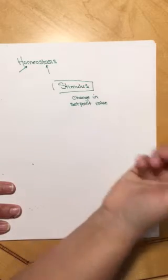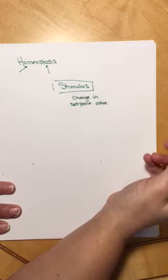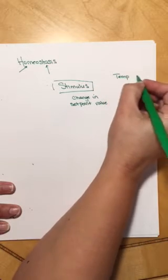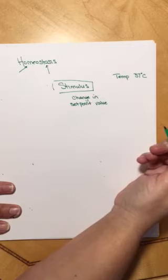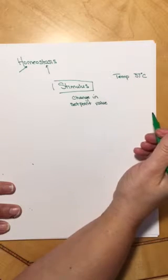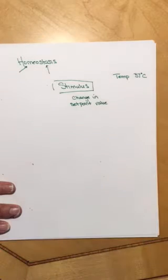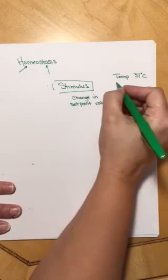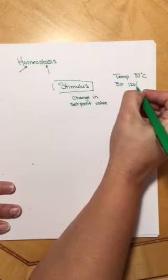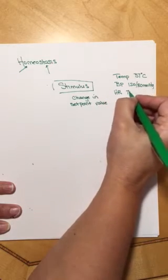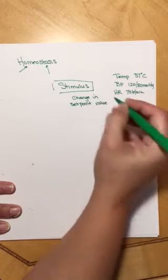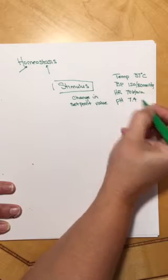We have a lot of different values that are set and maintained by homeostasis. Think about your body temperature — most people have a body temperature of somewhere around 37 degrees Celsius. One of the best ways to tell if something's wrong is if your temperature isn't correct. Another thing we look at would be your blood pressure — normal blood pressure is around 120 over 80 millimeters mercury. Your heart rate, we like to see that around 70 beats per minute. pH, somewhere around 7.4.